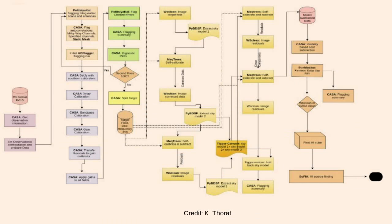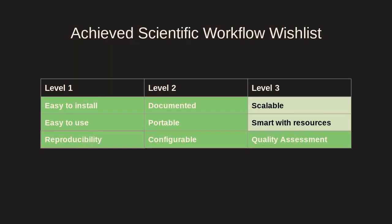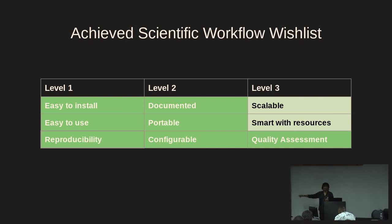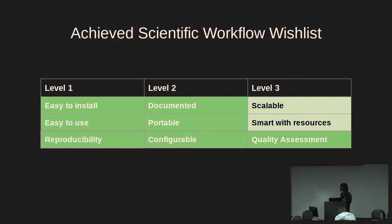Just in a nutshell, every task within — for example the line imaging worker — has different tasks that do specific processes, and everything is modularized in a Docker container. You get your input and then your output. Of the achieved workflow wish list I showed at the beginning, we've ticked most of the boxes. Currently the work is focused on scalability and being smart with our computing resources.